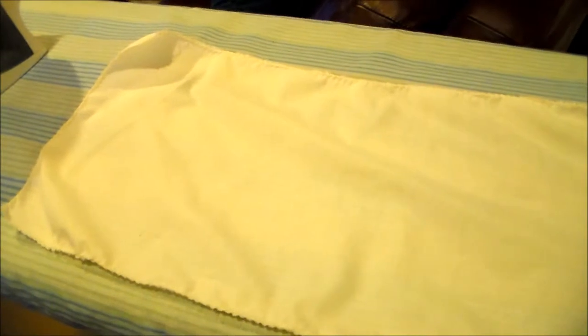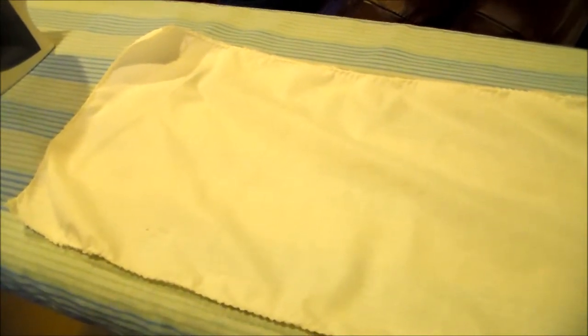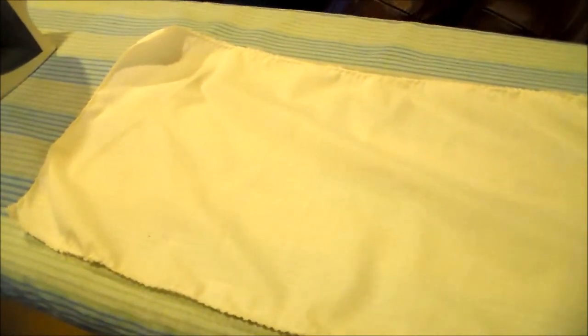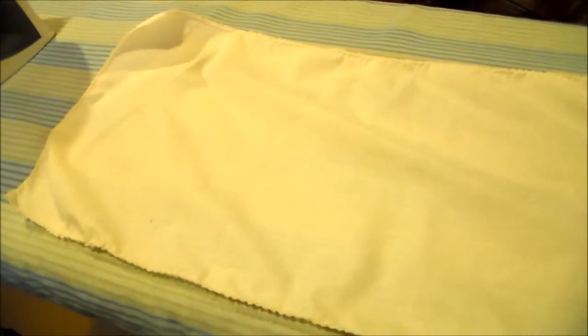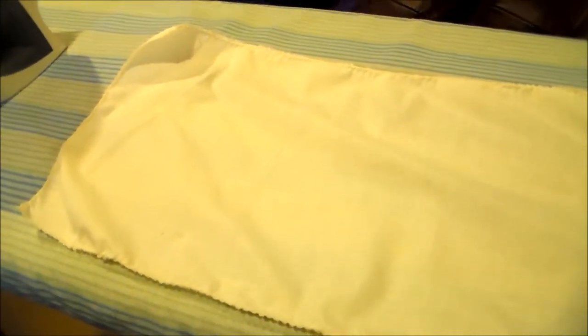For the sash at the top of the obi, we're going to do the same thing that we did for the sash to tie the yukata. I'm just going to cut a rectangle and then zigzag around the edges.